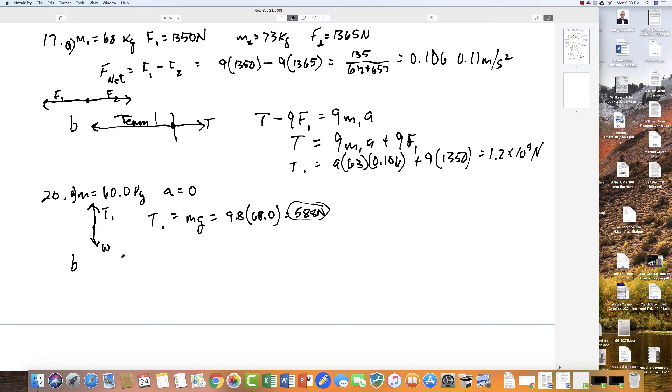Now the second part says the acceleration is changing to 1.50 meters per second squared. Tension is now going to equal his weight plus the force required to give him that acceleration. So tension equals 588 plus his mass times this acceleration of 1.50. You do that calculation and you get 678 newtons. The key difference is the first one has constant speed with no acceleration, the second one has an acceleration of 1.5.